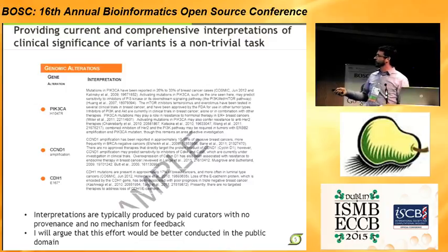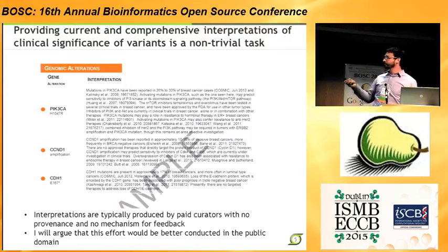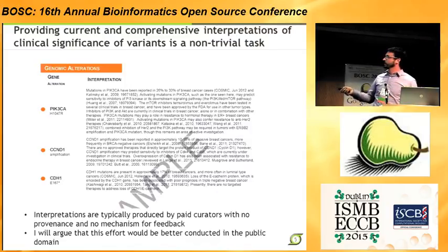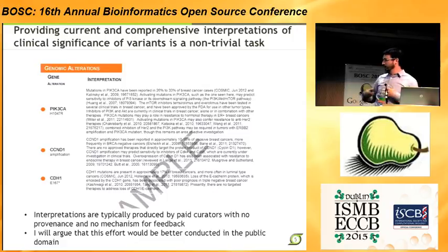The key element here is these interpretations — the five or ten sentences that someone thought a clinician really needs to know about the significance of having a mutation, like H1047R in the gene PIK3CA, usually in a disease-specific context. These statements are the missing piece in our workflow, and they're really, really hard to make well — it's a very large curation task requiring information from very disparate sources. Right now, these interpretations are being created, in the case of Foundation Medicine, by paid curators with no obvious provenance, no mechanism for feedback, and sort of behind closed doors. I'm going to argue that this would really be better conducted in the public domain. And that's what CIVIC is all about.